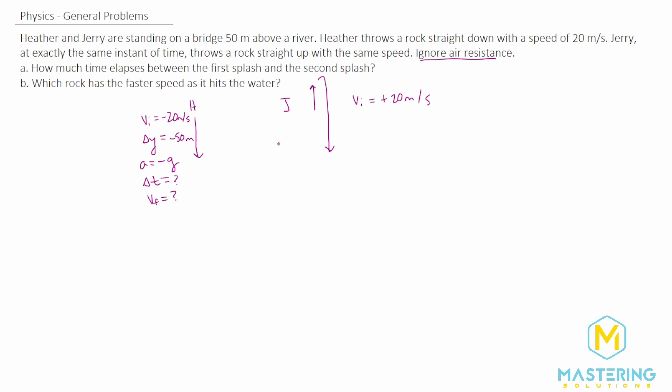The delta y is the exact same. Don't let that confuse you, because we're starting out at the exact same point. And so it doesn't matter that Jerry's is going up first, because where it starts to where it ends is the difference, or the delta y, and that will be the same as Heather's. So they'll both be a negative 50 from where they started to where they ended.